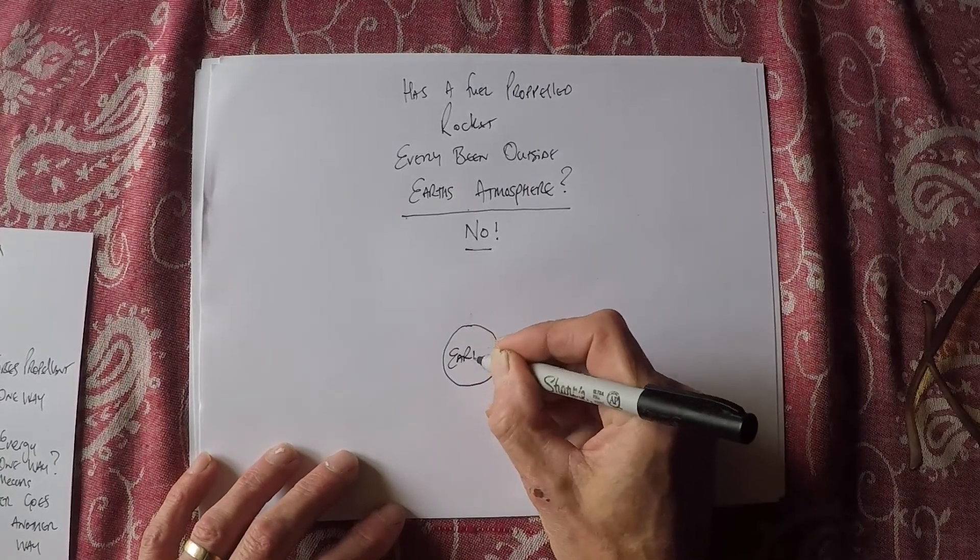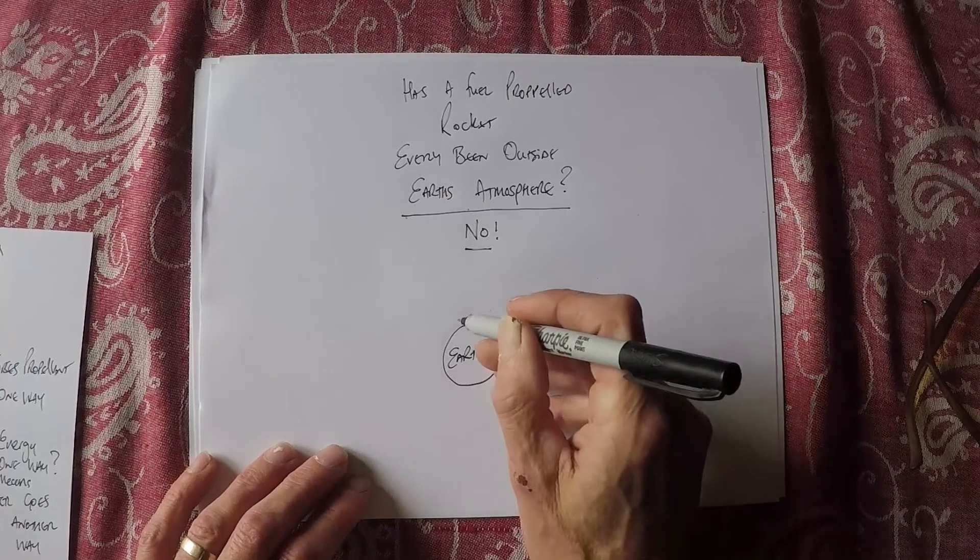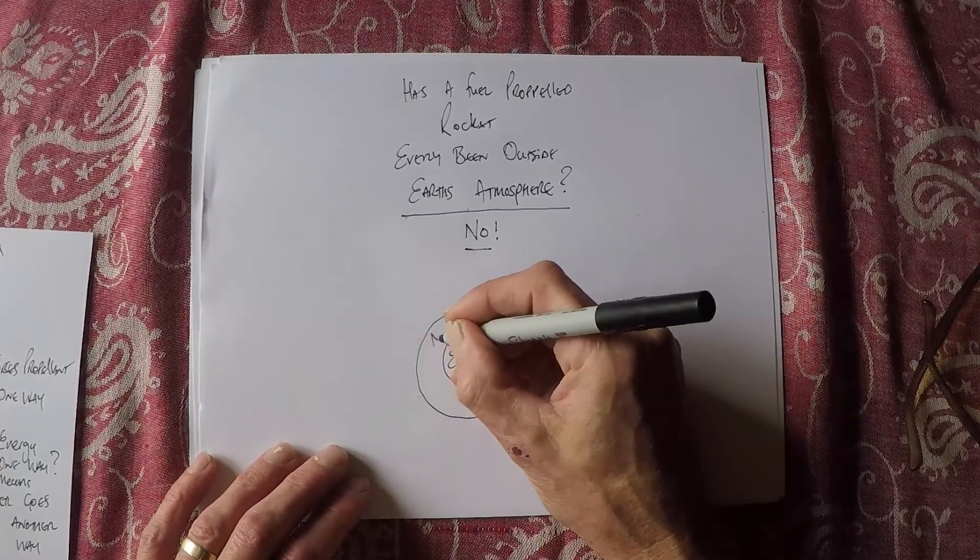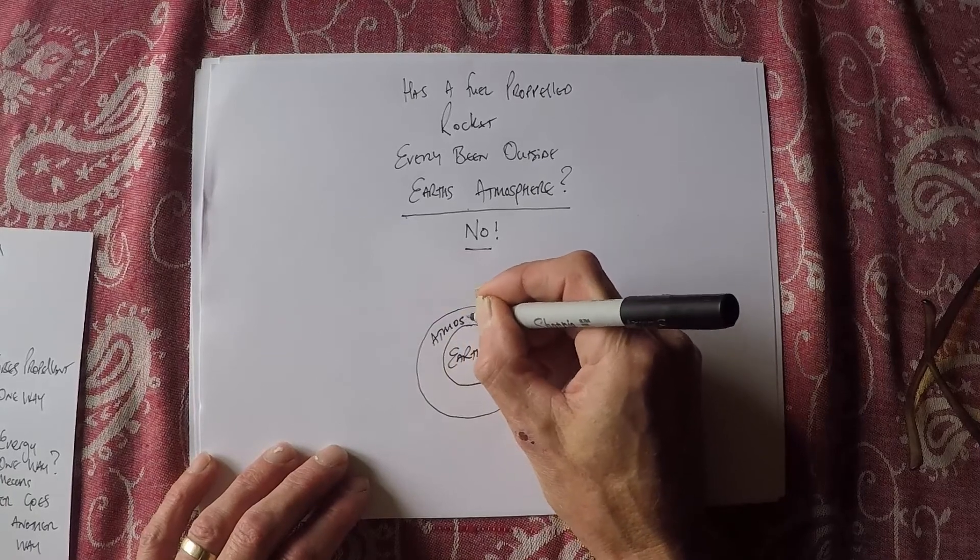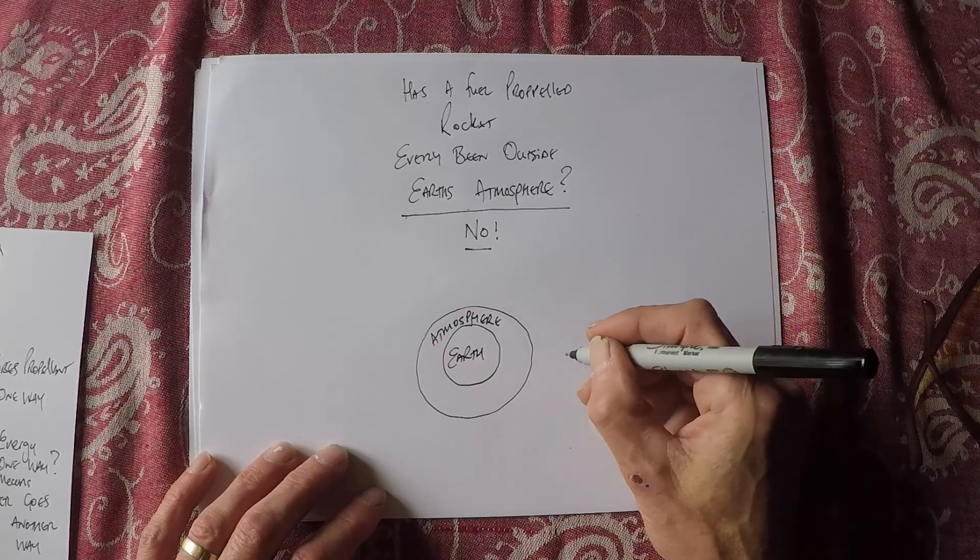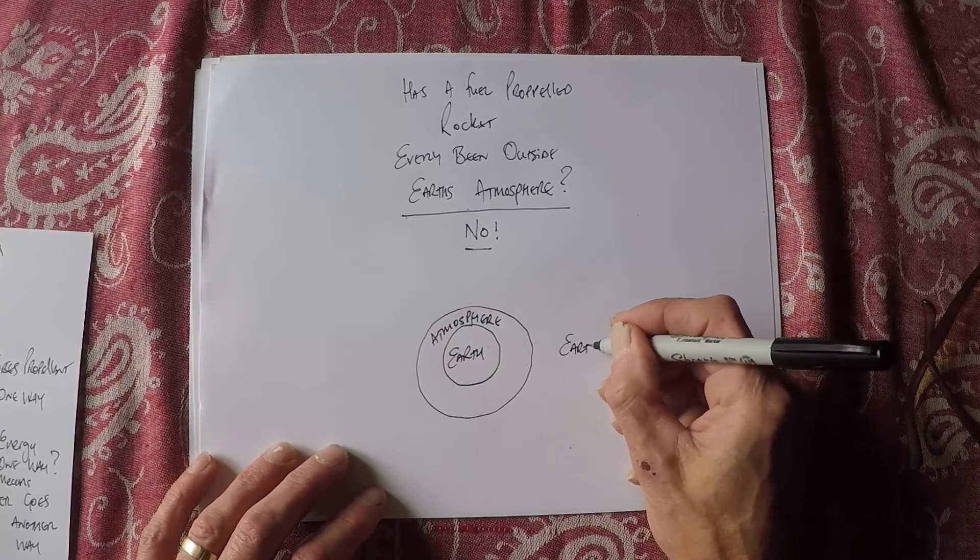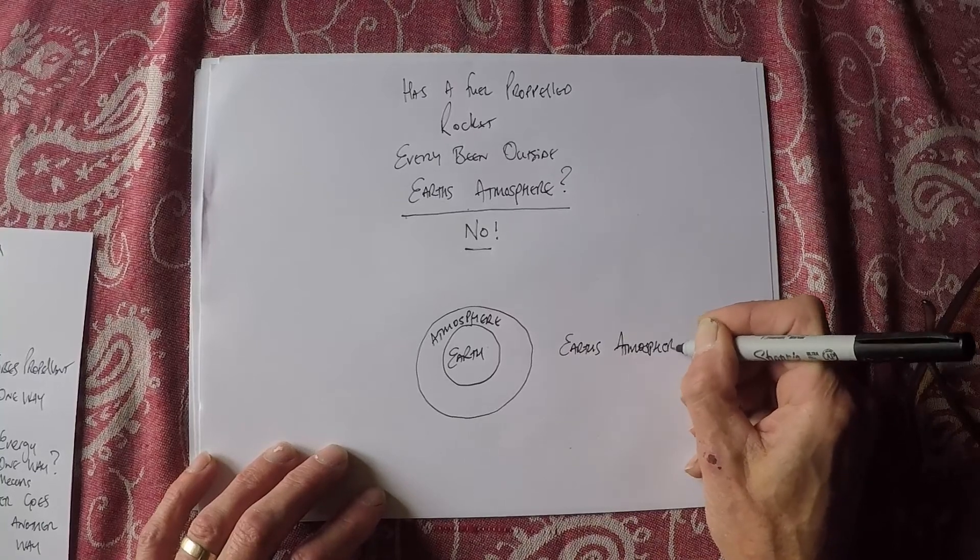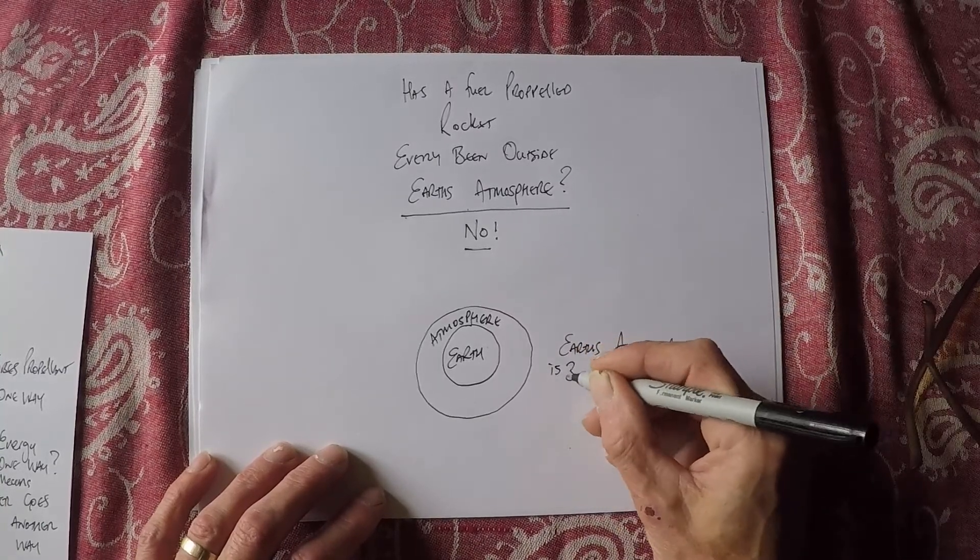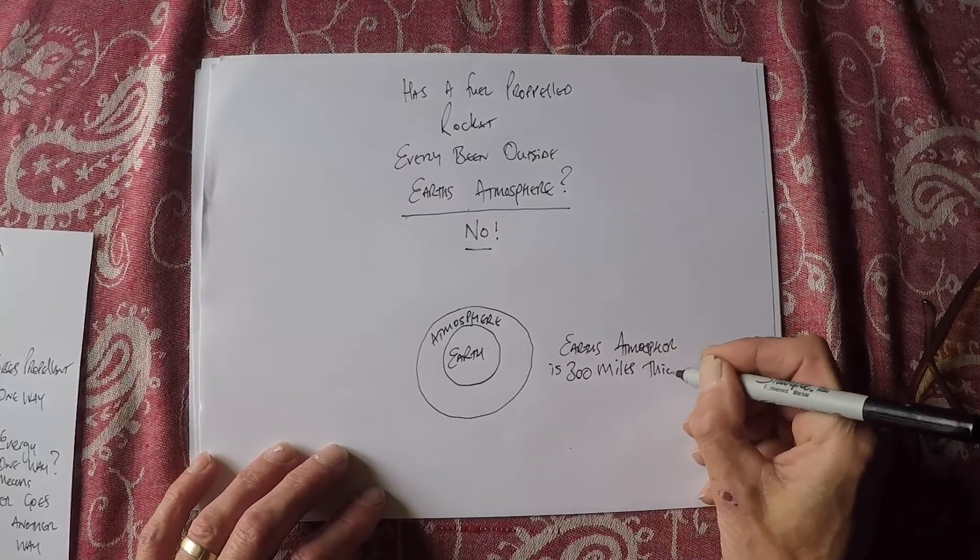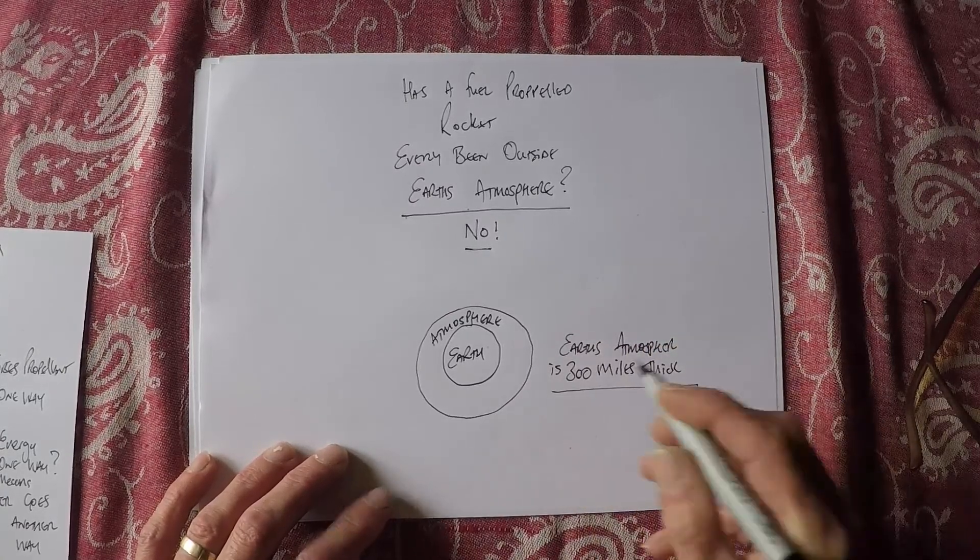Now this is a very easy one. The answer to this is no. Now let's just assume this is Earth. This is Earth's atmosphere. Earth's atmosphere is 300 miles thick.